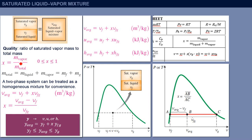Quality is the mass of vapor divided by total mass of the mixture. Total mass of the mixture is equal to mass of saturated liquid plus mass of saturated vapor.